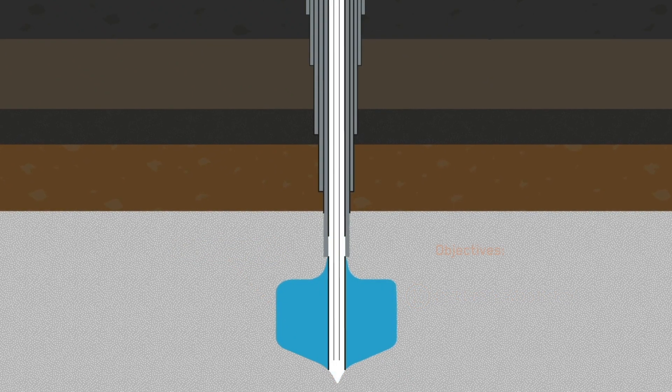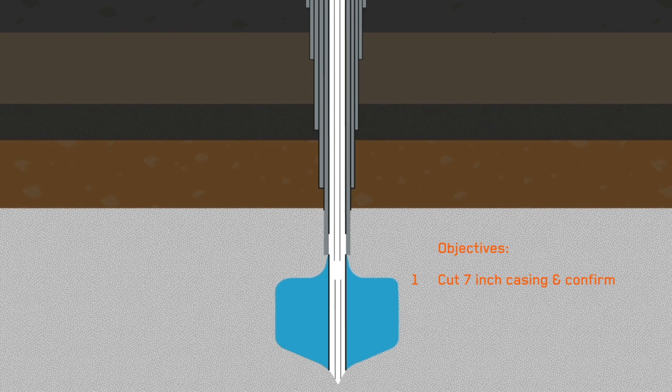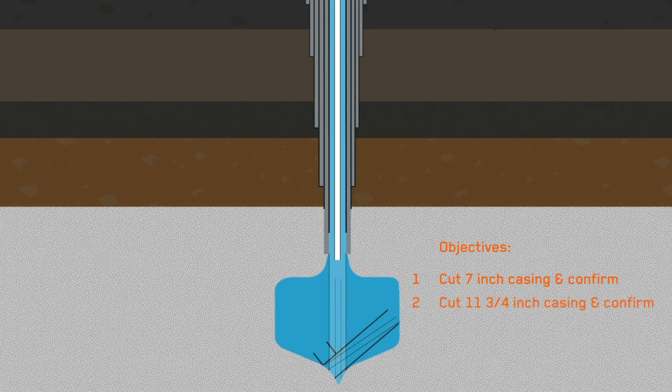In response, the operator planned an intervention to remove the fish by cutting the affected casing sections and dropping the fragments into the cavern.